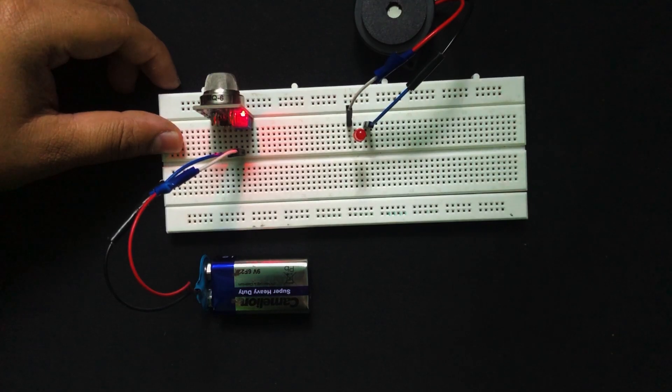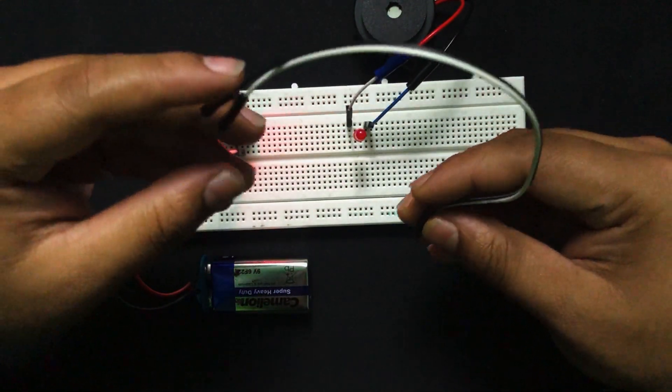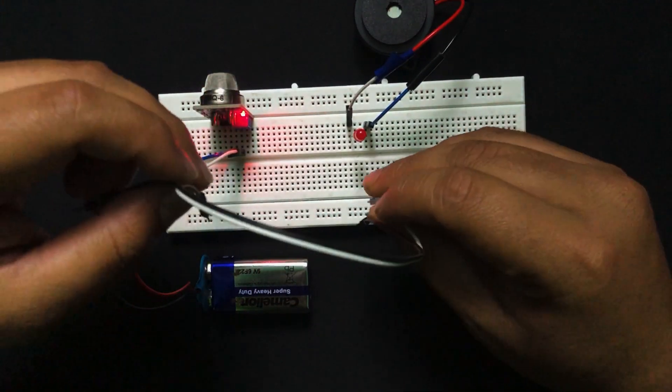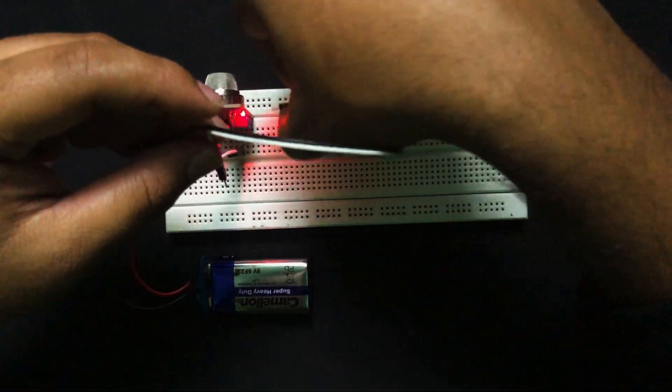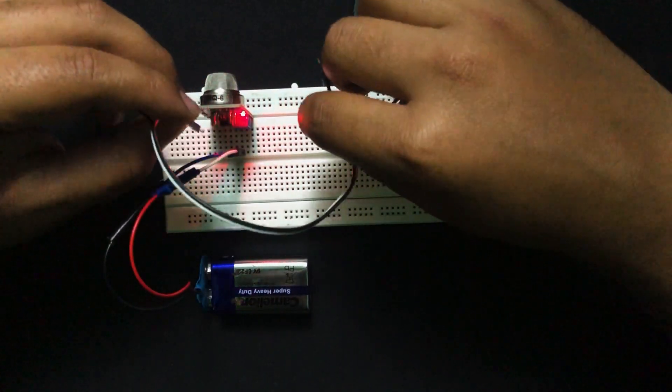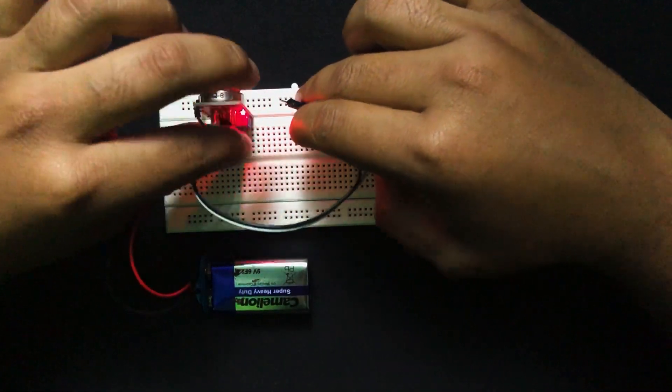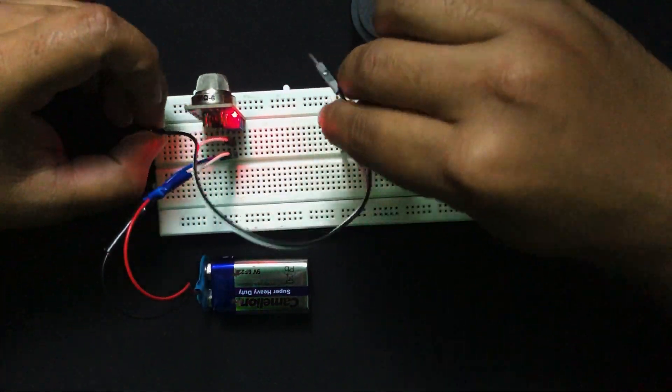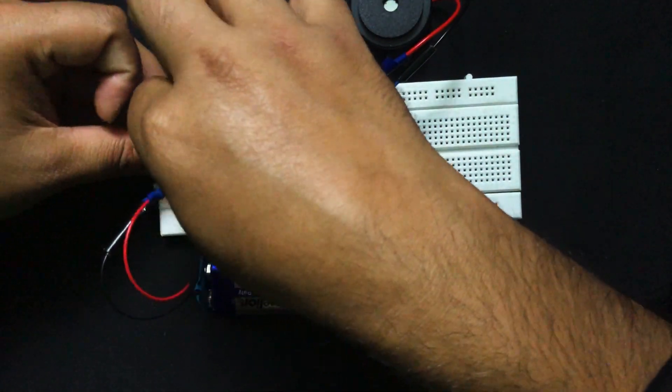Now giving connections to the LED and our sensor, we're going to use male-to-male jumper wires. Taking the positive terminals, I'll connect the positive terminal in this manner: one pin here and the other pin goes to the VCC or the positive terminal of the battery. The negative terminal that we have taken will be going to D0 of our sensor.